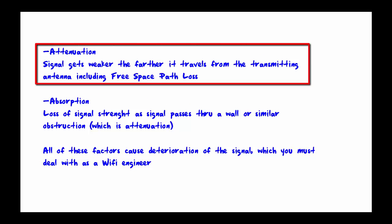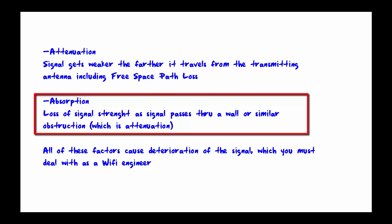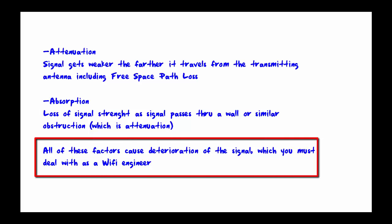Next, you have attenuation, which simply means that the signal is getting weaker the farther it goes from the transmitting antenna. This is sometimes referred to as free space path loss. Then you have absorption, which is the loss of signal strength as it passes through a wall or a similar object, which is attenuation. If you had a brick wall or a stone wall, you'd probably get more attenuation as it passes through that than passing through a cubicle wall. All of these factors cause deterioration in the signal, and that's what you must deal with as a Wi-Fi engineer.